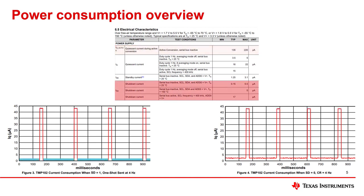The next type of current we will discuss is shutdown current. Shutdown current is consumed while a digital temperature sensor is completely idle. The device does not make measurements in this mode, and the alert and trip outputs will not activate. Different shutdown currents are shown in this table for different test conditions, and can represent the leakage through the IC when in a disabled state. When in shutdown mode, the power consumed is almost 0 microamps, represented by the blue lines between conversion cycles on the left graph.